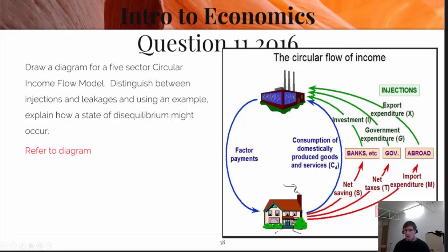Here we've got to draw up a circular flow diagram in the five-sector model and you had to distinguish between injections and leakages. We've got the five sectors: businesses, households, banks, governments and the international sector. The leakages are net savings, taxes and import expenditure. From the various sectors we get injections: investment, government expenditure and export expenditure. To explain in more detail, the households put their money in the bank to be saved, which is used as an injection for businesses to take out as loans for capital investment and so on.